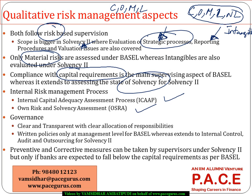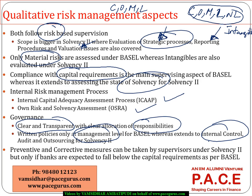When it comes to governance, in both frameworks we see that governance norms are clear and transparent, and responsibilities are allocated quite correctly. But the only thing is that written governance policies are applicable only at the management level in Basel. When it comes to Solvency 2, it gets extended to even a few more aspects like audit, internal control, and outsourcing. The scope of the governance document is slightly higher in case of Solvency 2 compared to Basel norms.